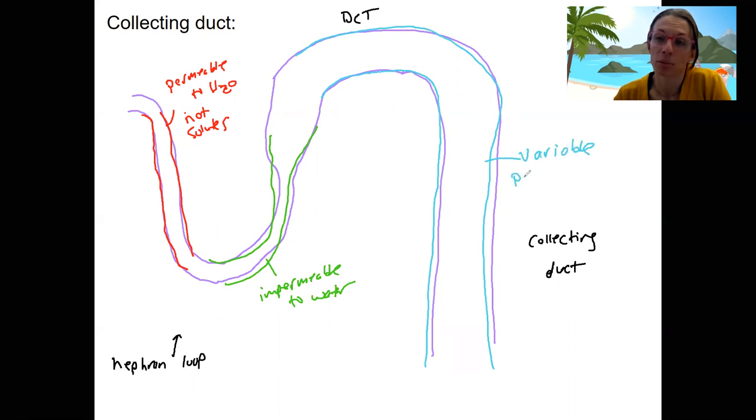What determines the permeability? Aquaporins, whether they're present or not. So remember the two things we've got to think about if we want something to leave is one, is there a drive for it? Two, are there the proteins to help it get through if it needs them?